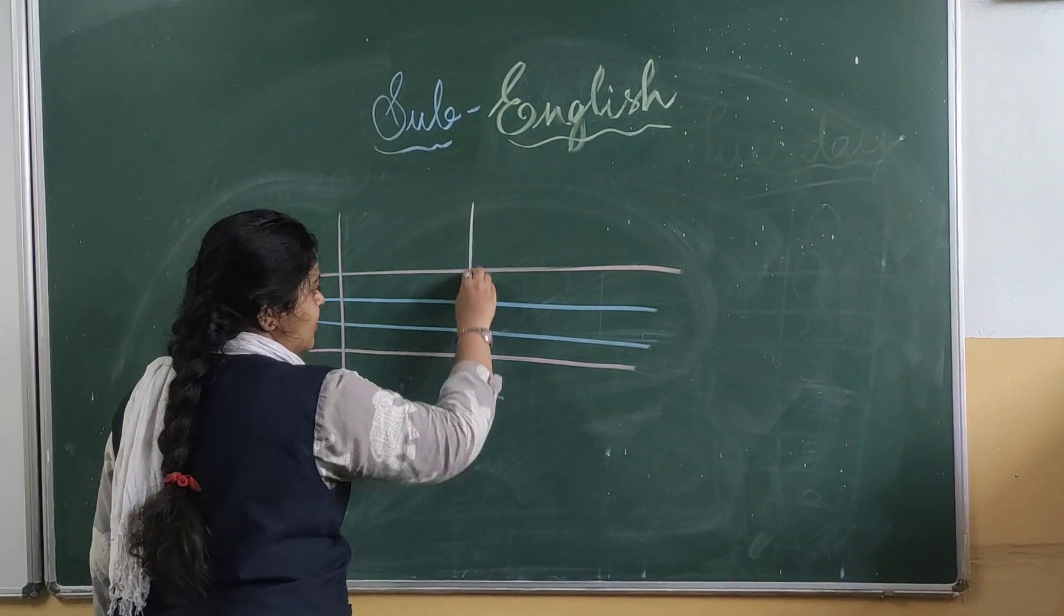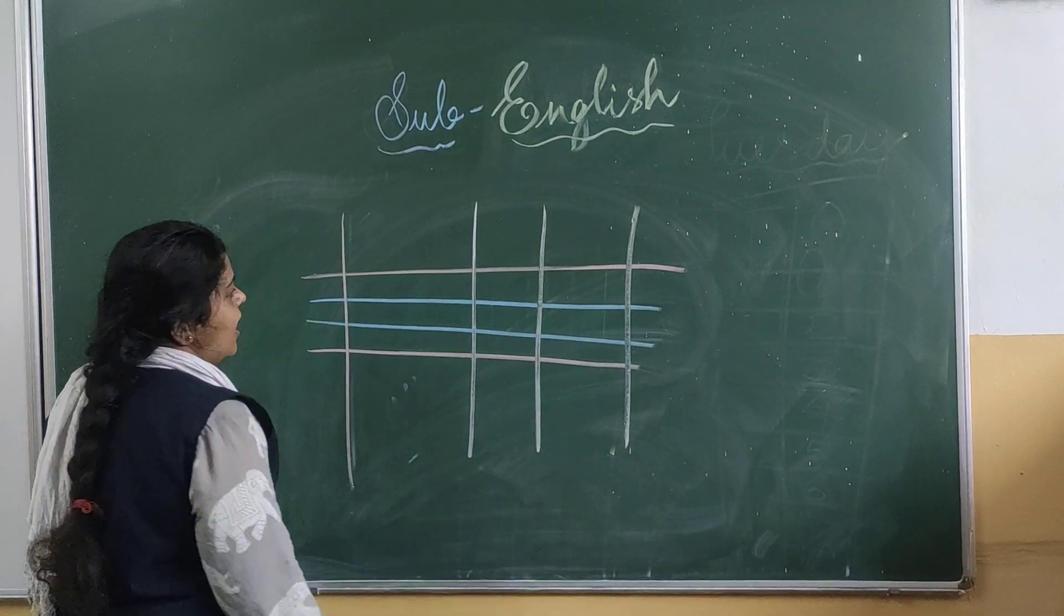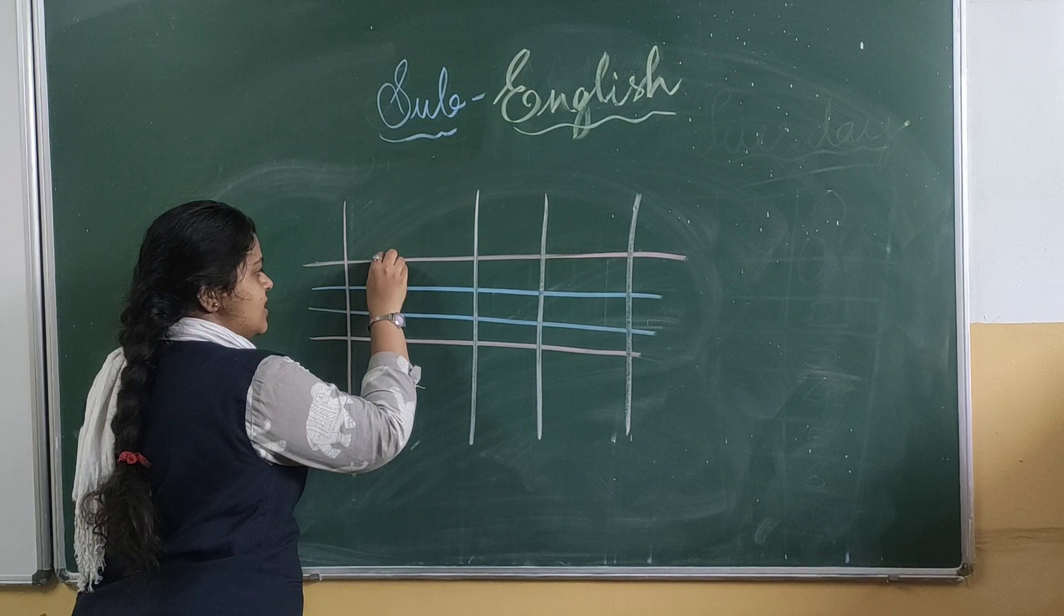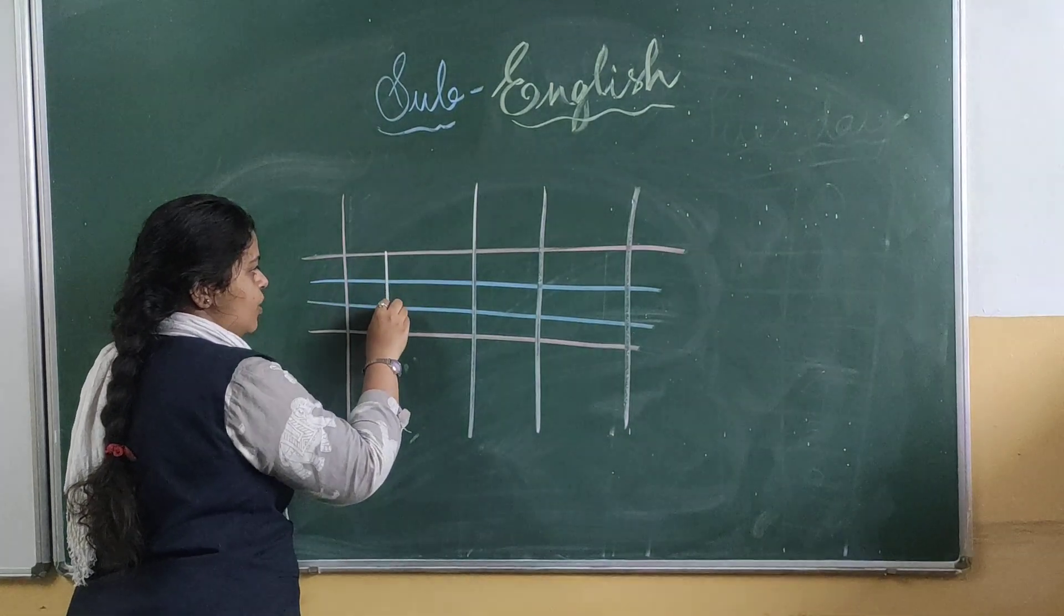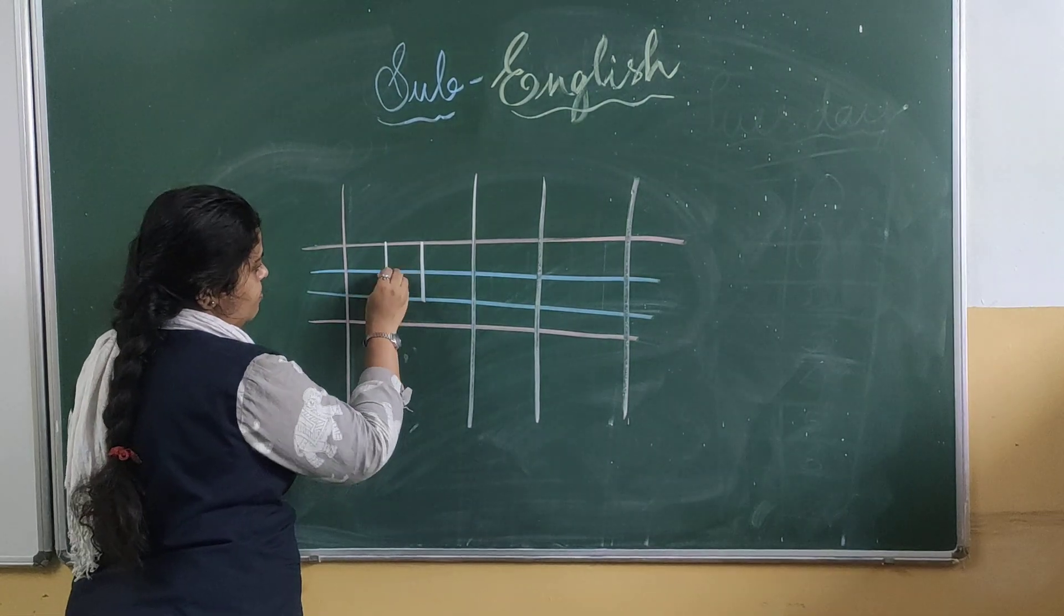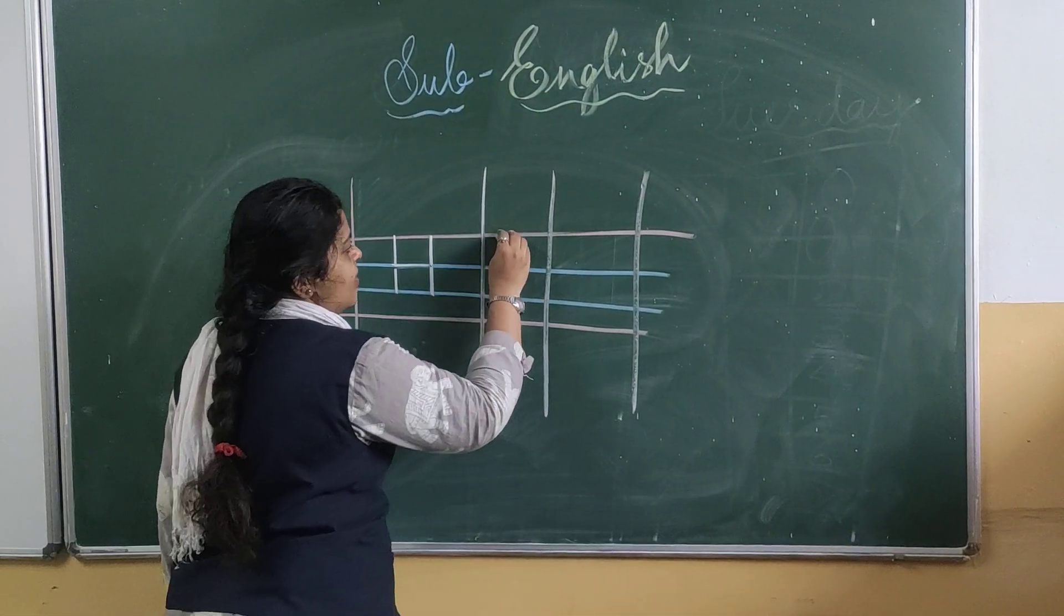Children, before that draw the vertical lines like this. Okay, let's start. See children, draw the standing line from top red line to bottom blue line and one more standing line from top red line to bottom blue line and draw the sleeping line on the top blue line. Alright. Once again.